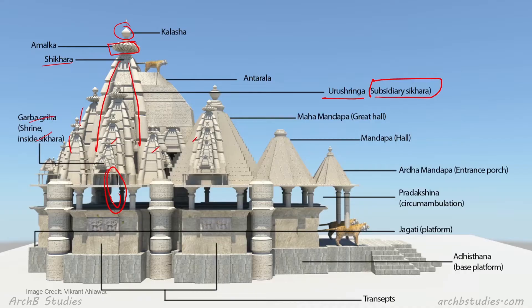Between the Garbhagriha and the Mandapas, the space is called Antarala. All three hall spaces are Mandapas: this is the Mahamandapa, this is the Mandapa, and this is the Ardhamandapa.